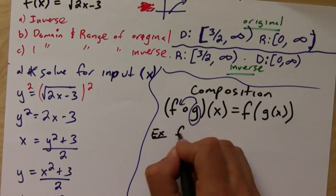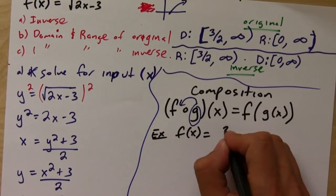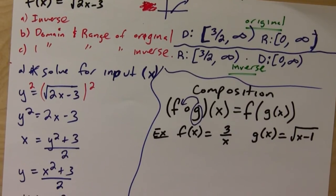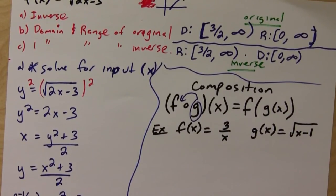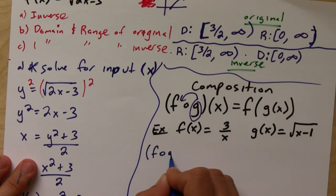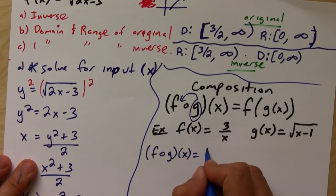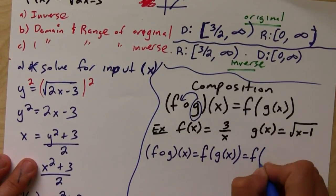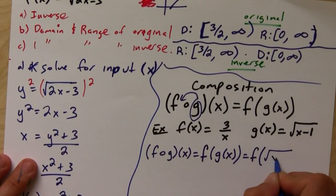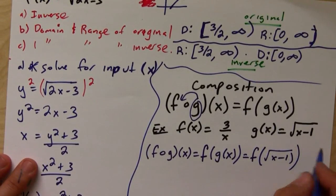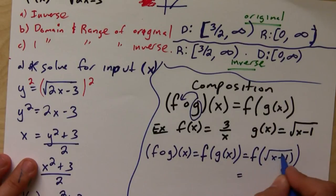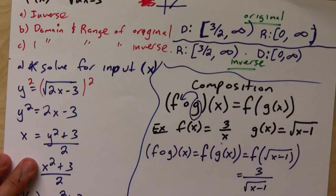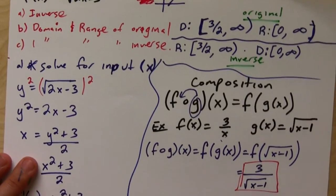Let's say we have F of X equals 3 over X, and G of X equals square root of X minus 1. If I want to find the composition F of G of X, this means I'm looking for F of whatever G of X is, which is square root of X minus 1. This tells me to plug square root of X minus 1 into every X in F. So this is going to be 3 over square root of X minus 1.